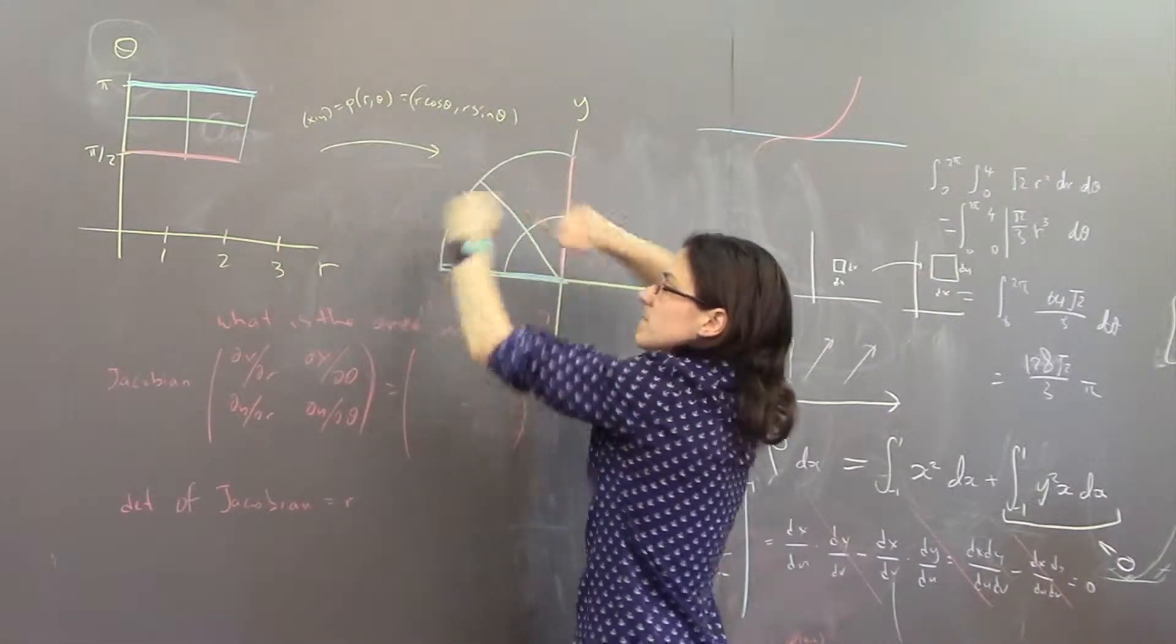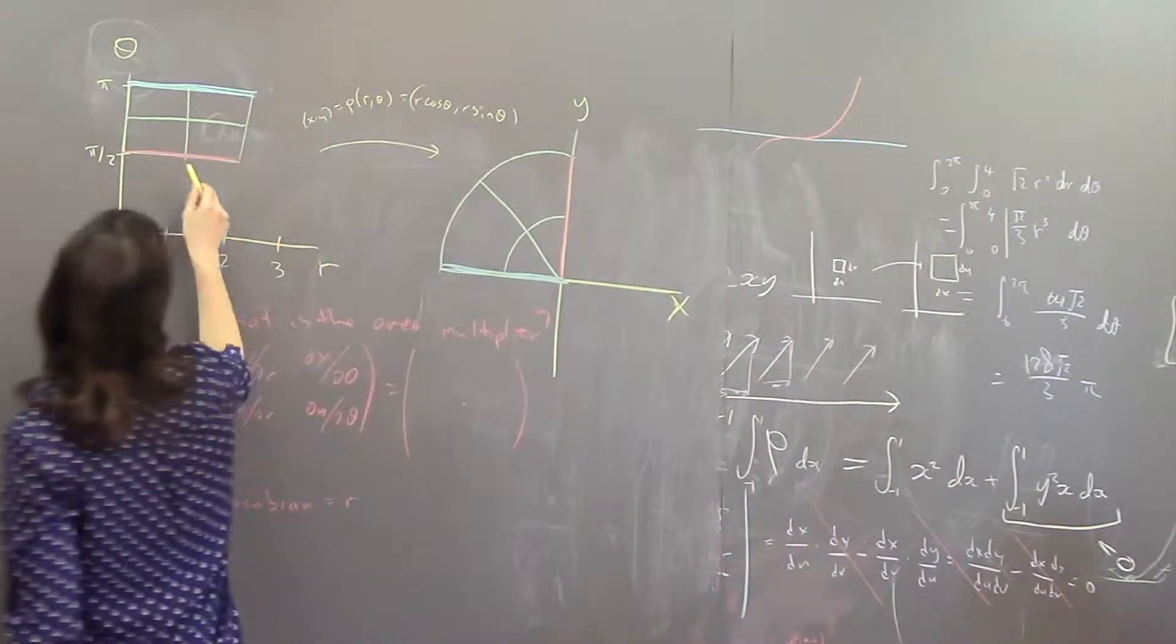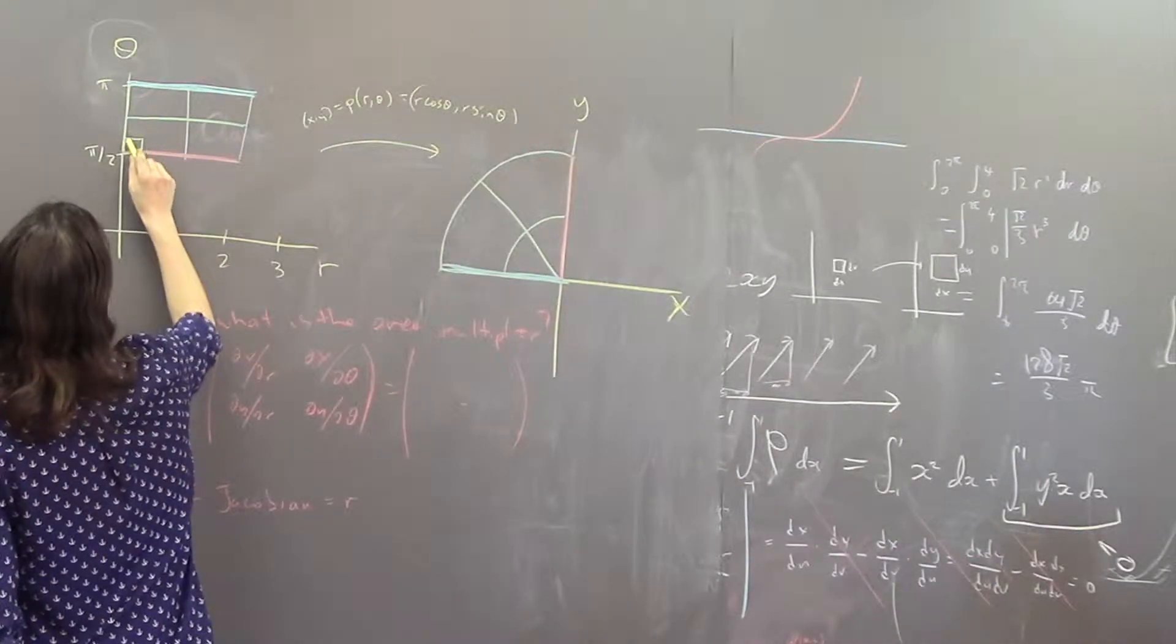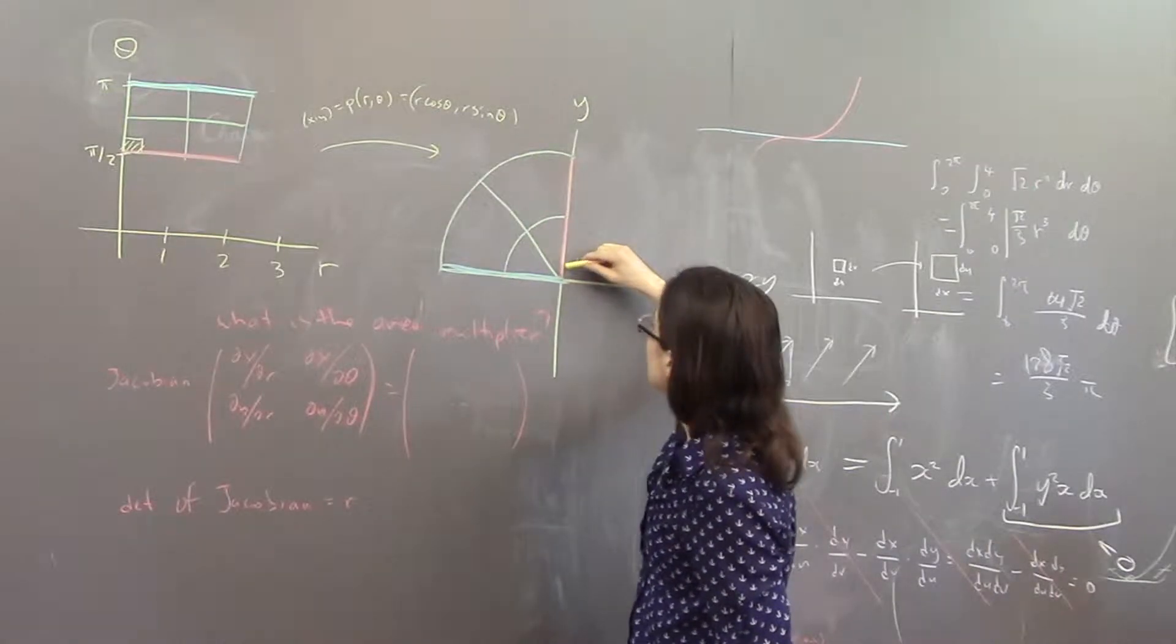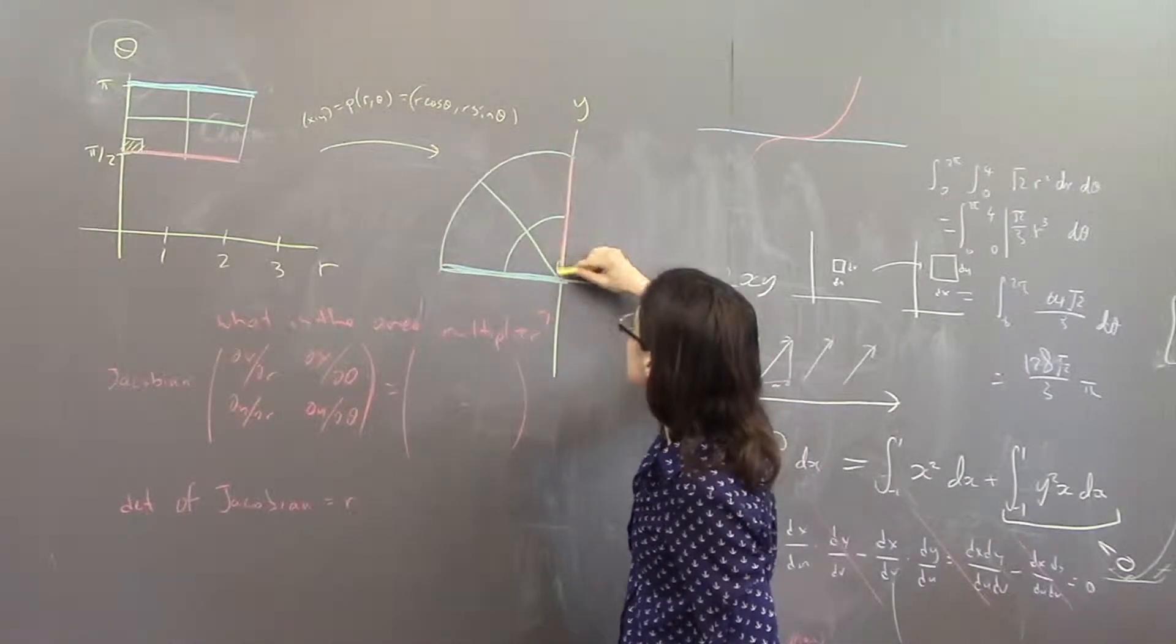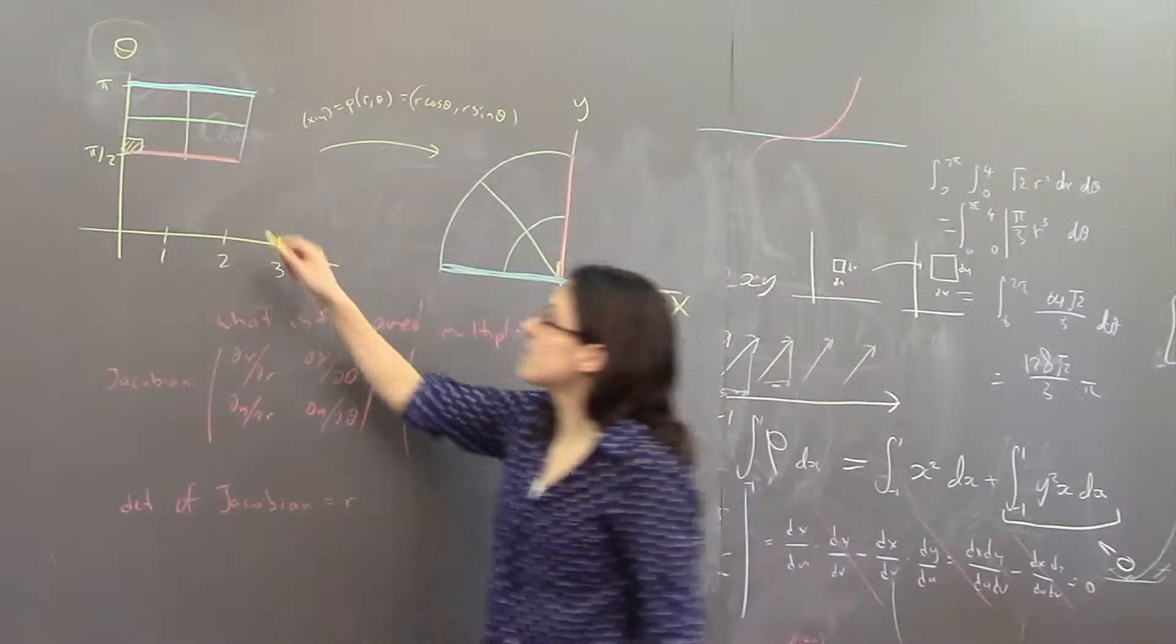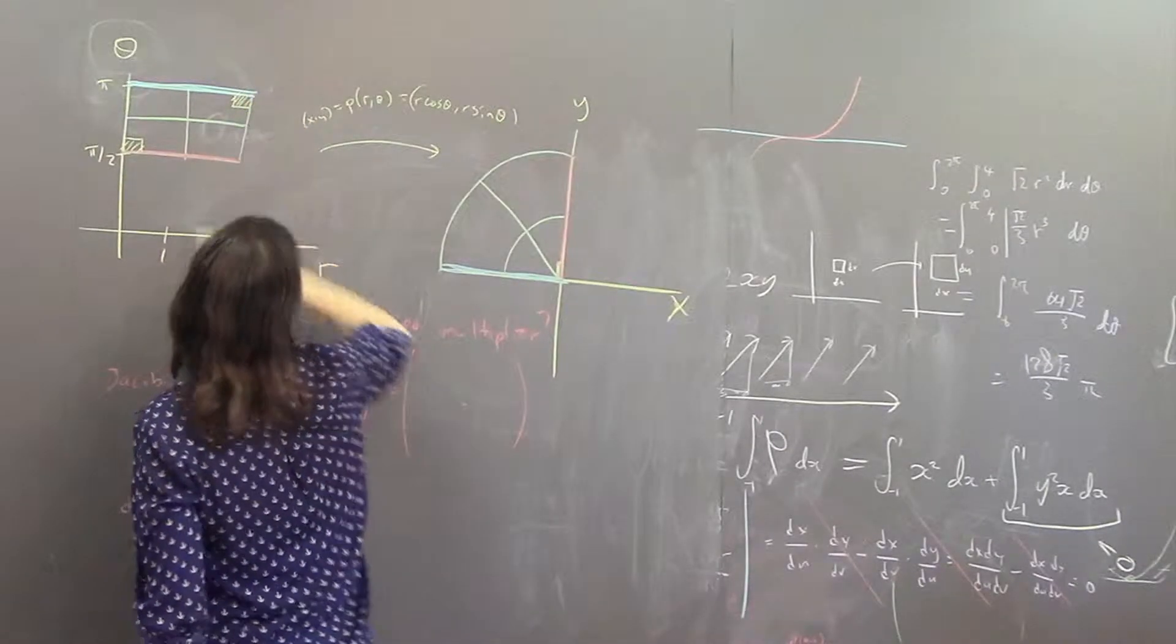If you take a little rectangle close here to the origin where r is close to 0 and theta is close to pi over 2, well it turns into this tiny little sliver that you might not even be able to see far away. But if we take a little rectangle here where r is close to 2 and theta is close to pi, it looks something like this.